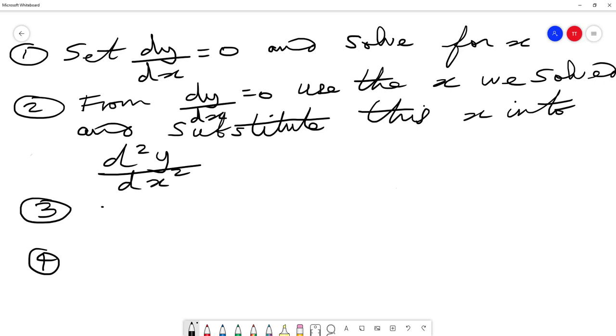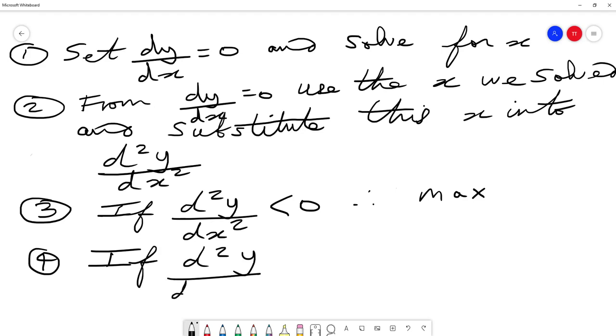Once we've done that, the rule is: if d²y/dx² is negative, therefore we have a maximum. If d²y/dx² is positive, therefore we have a minimum.